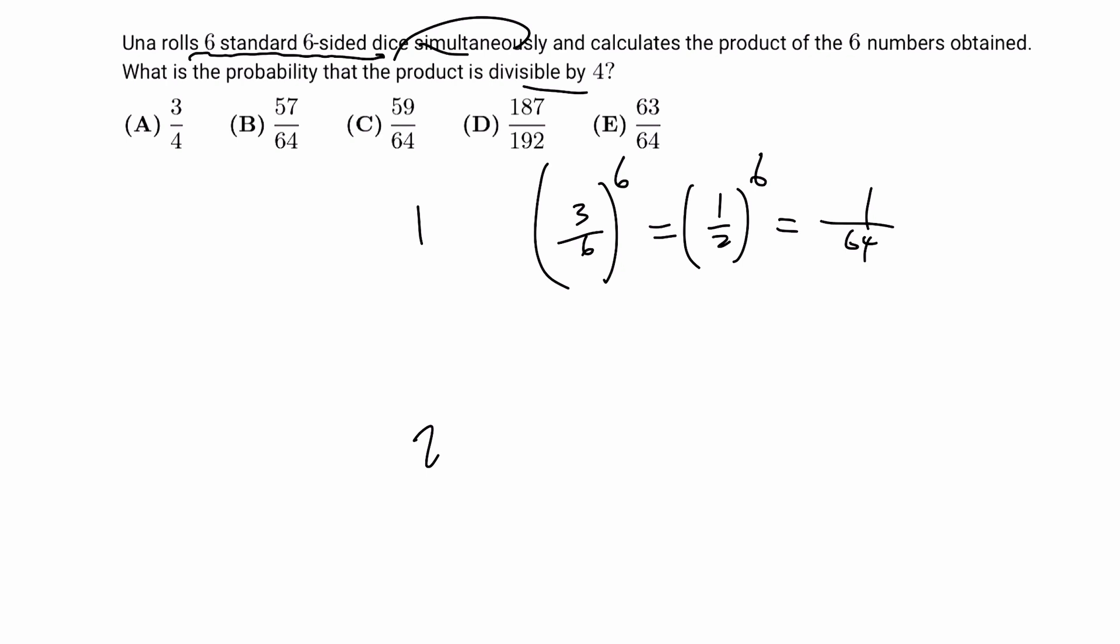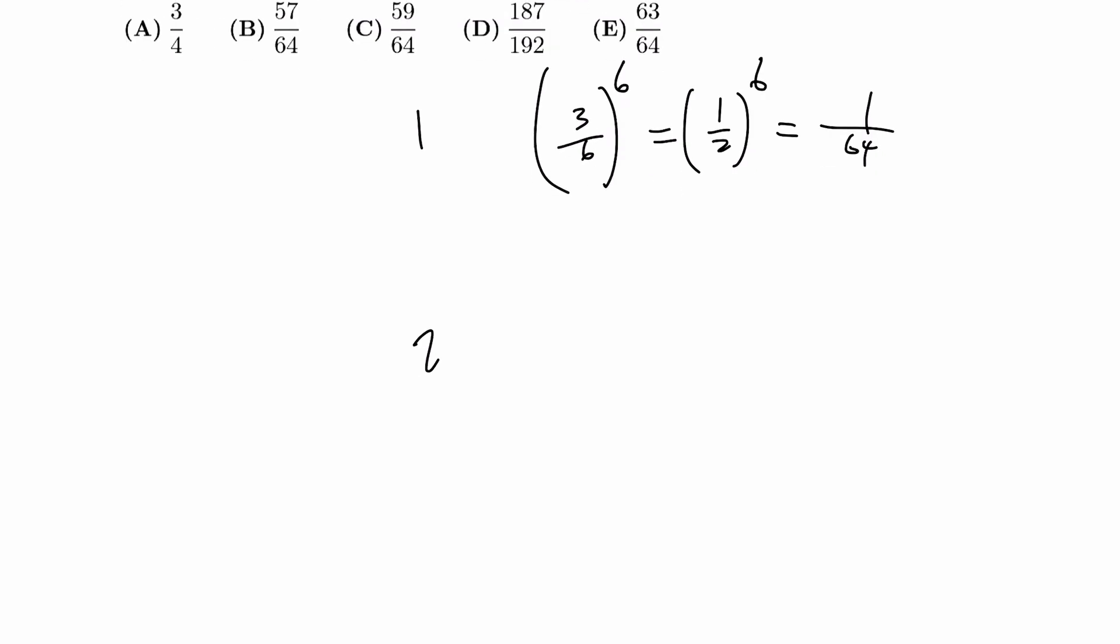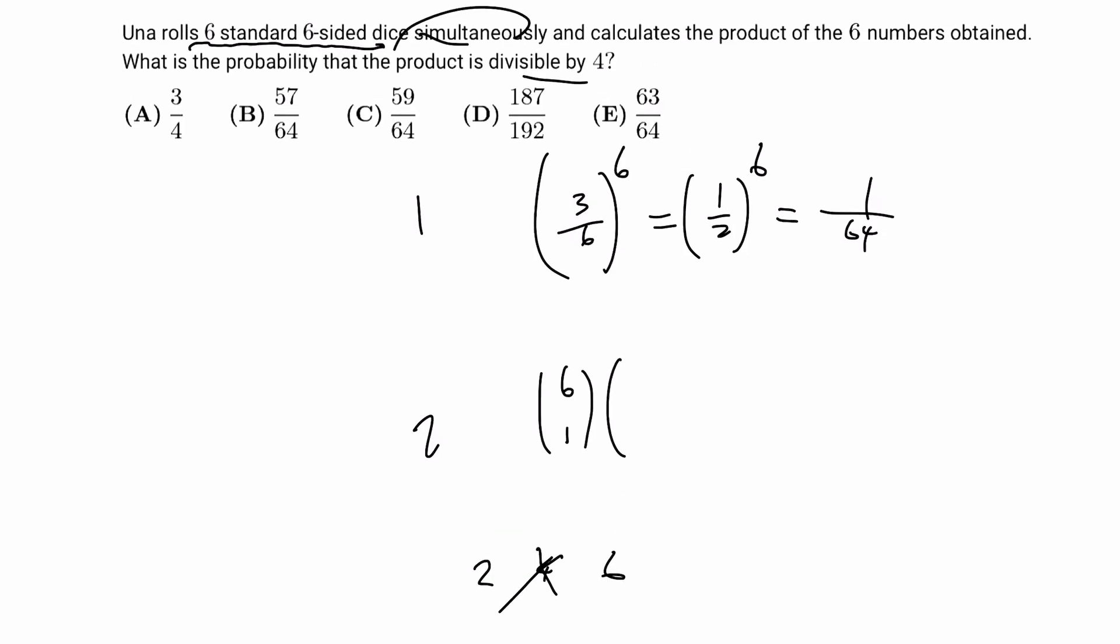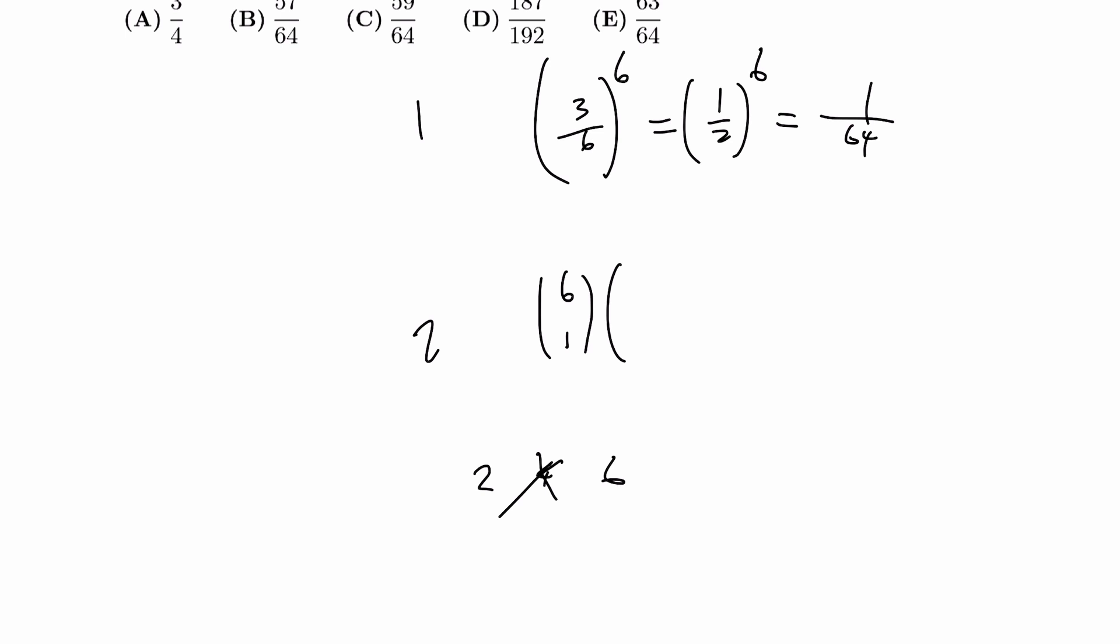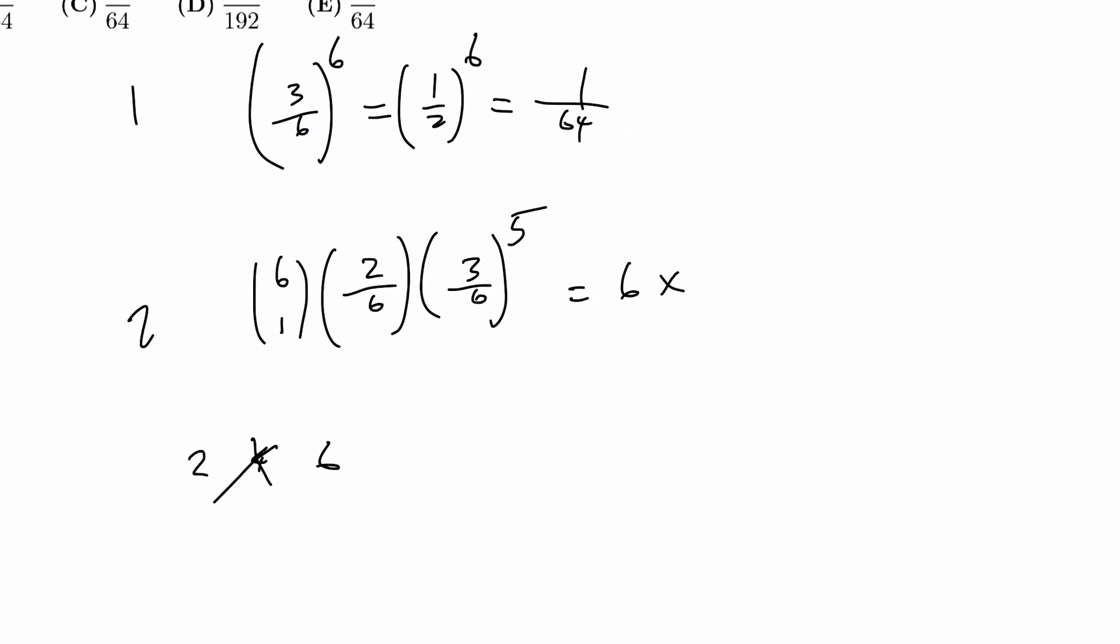If it is divisible by two, then one of them is divisible by two. So we can choose one of them to be divisible by two, so six choose one. And for that to be divisible by two, it can be two or six. Notice that it cannot be four, because if it is four, then it is already divisible by four. So that would be two-sixths, and the rest has to be odd as well. If we calculate that, we get six times one-third times one-half to the fifth.